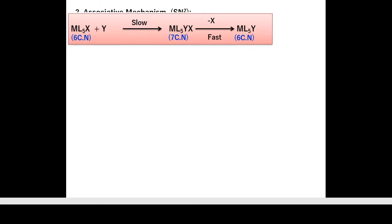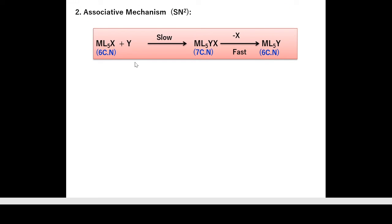In the associative (SN2) mechanism, the first step is the slowest one — it is the direct addition of ligand Y to the complex ML₅X, giving ML₅XY with seven coordination number as an intermediate. In the next (fast) step, there is removal of ligand X, giving ML₅Y as a product with coordination number 6.